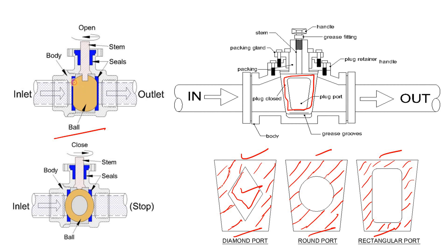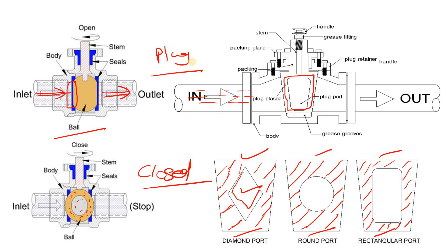When the valve is open and when it is closed — when the hollow part is aligned with the flowing fluid, your ball valve or plug valve is open. Here, the hollow part is facing you — you are seeing the hollow part — which means the solid part is aligned with the flowing fluid, meaning the valve is now in a closed condition.